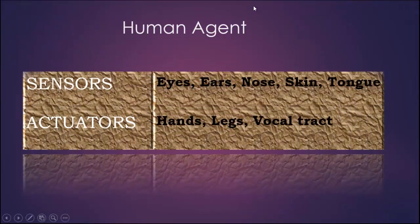An AI human can also be viewed as an agent. It has sensors like eyes, ears, nose, skin, and tongue to take percepts from the world, and actuators like legs, hands, vocal tract, and facial expressions to act upon the world.